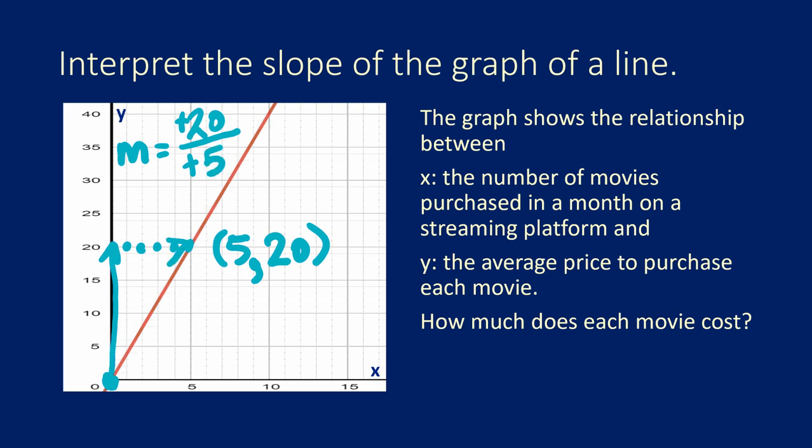Plus 5. Now positive 20 divided by positive 5 gives us positive 4. So 4 over 1, or you could say $4 per one movie. So $4 for each movie is the answer to the question.